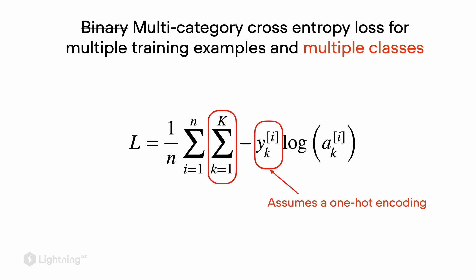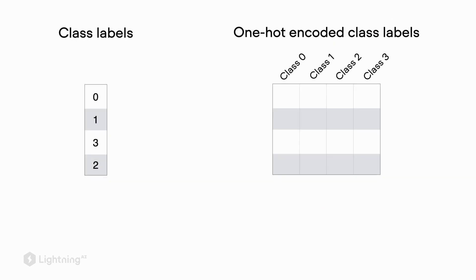We will now go over the one hot encoding needed to get the class labels into the right form for use with this equation. Assume we are working on a classification problem with four possible labels: zero, one, two, and three. On the left hand side, assume we have different training examples corresponding to these four class labels — the first has class label zero, the second has class label one, the third has class label three, and the fourth has class label two.